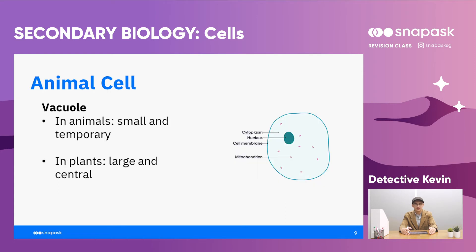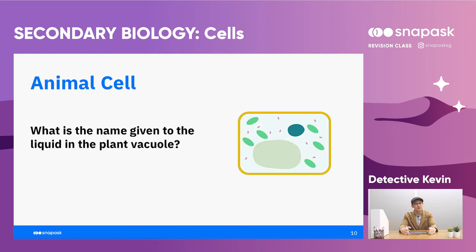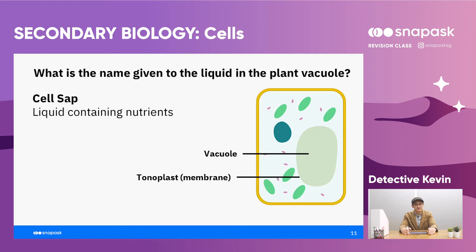The vacuole in animals is small and temporary, whereas in plants it is large, central and permanent. What is the name given to the liquid in the plant vacuole? The answer is the cell sap. The cell sap is a liquid which contains nutrients, surrounded by a membrane called the tonoplast.